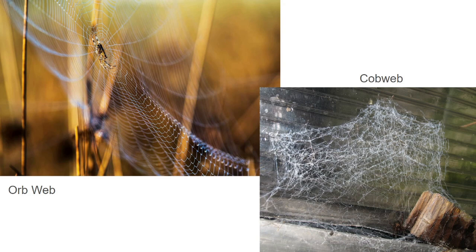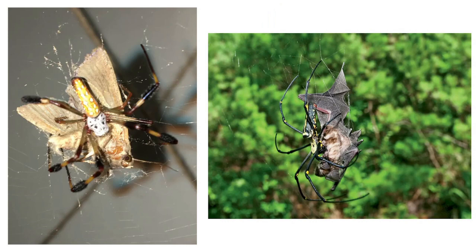But orb weavers are different. They're unique among spiders because they specialize in catching things in the air. Here we see two examples of an orb weaver spider devouring both a moth and, on the right, even a bat. Some orb weaver spiders can grow pretty massive. This is what the orb webs are for — they're two-dimensional and strung up in a vertical way, designed to catch prey that is flying along a vertical path.